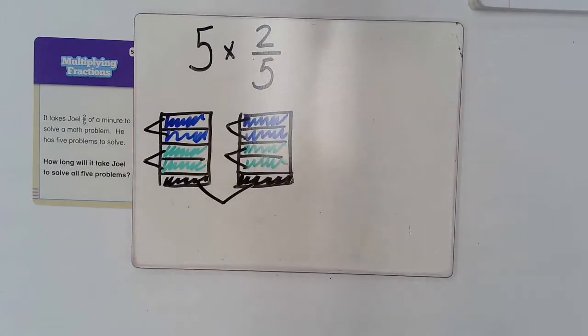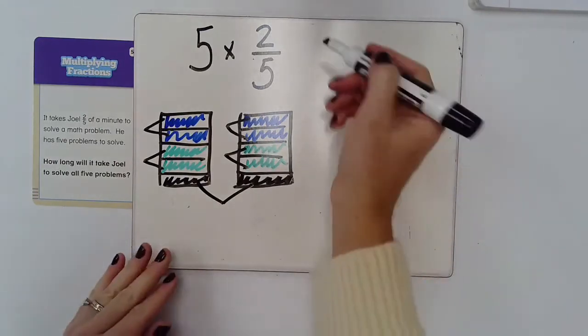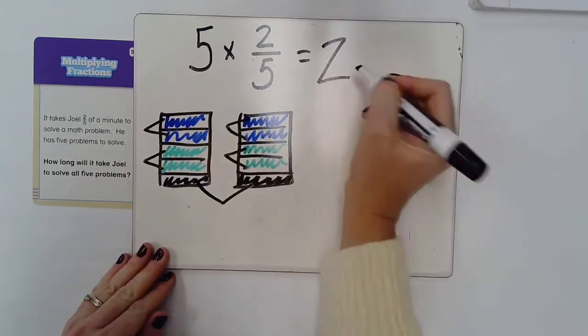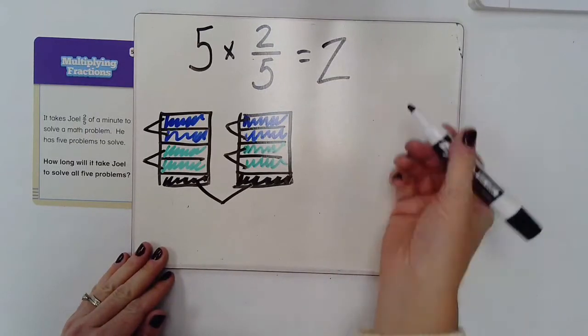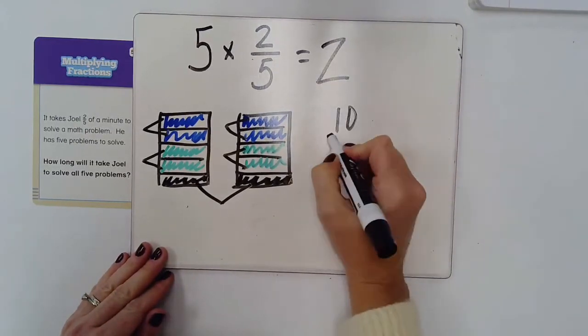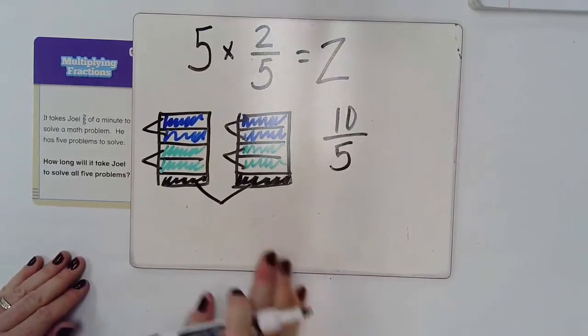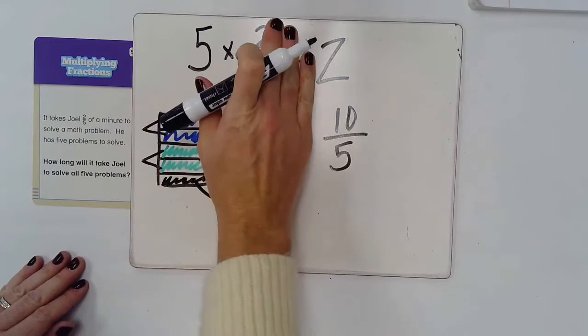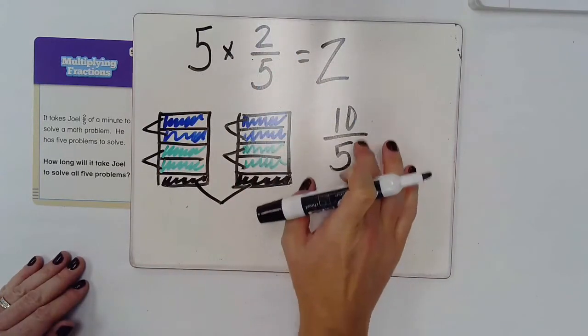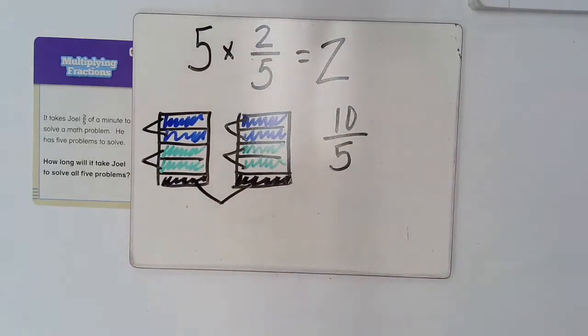which gives me two holes. Or you could think about it as ten-fifths. Because five groups of two-fifths could give me ten-fifths or two holes.